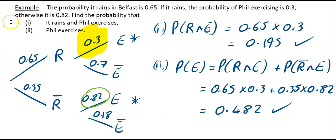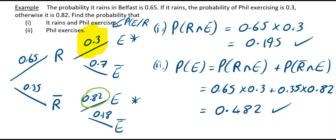This was an example from our tree diagrams video. The probability it rains in Belfast is 0.65. If it rains, the probability of Phil exercising is 0.3. So this 0.3 represents the probability that Phil exercises given that it rains.